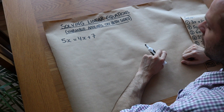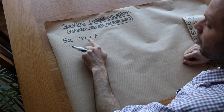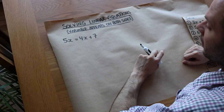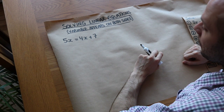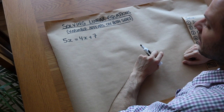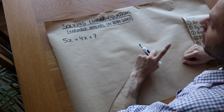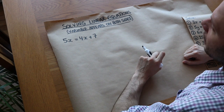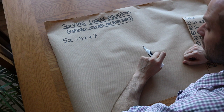Notice the difference with the previous video where we solved linear equations. This time we've got an x term on both sides of the equation. What we want to do is collect the x terms on just one side of the equation so that we only have a single occurrence of x.